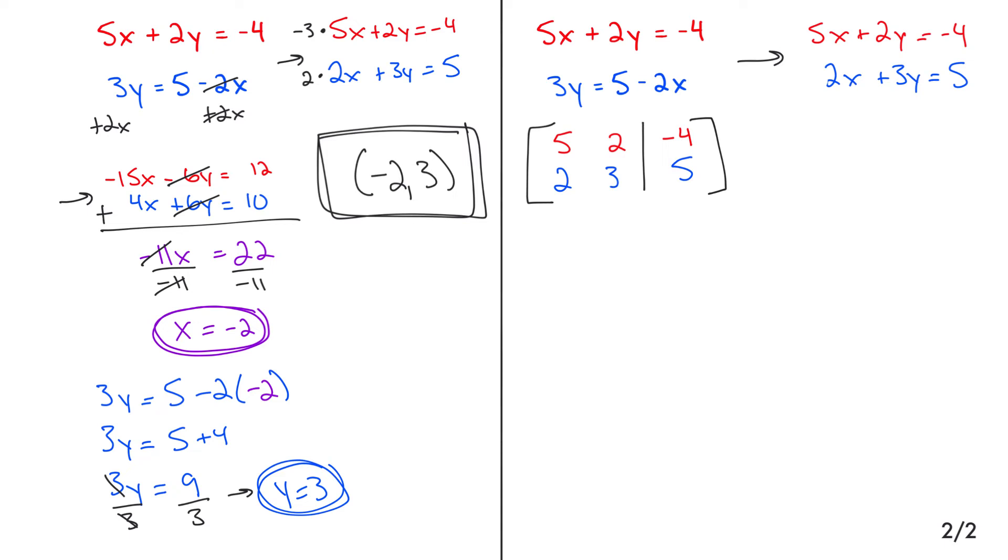It is just the leading coefficients for the variables. The very first row is the first equation. The second row is the second equation. The first column are the coefficients in front of the x values. The second column are all of the leading coefficients in front of the y values. The third column is the solution column.